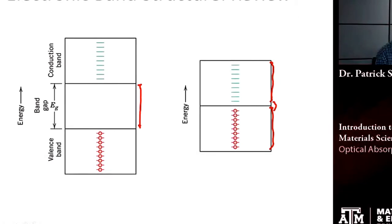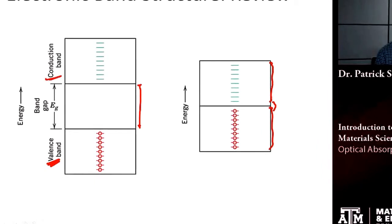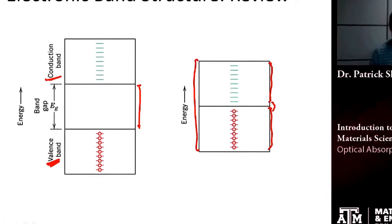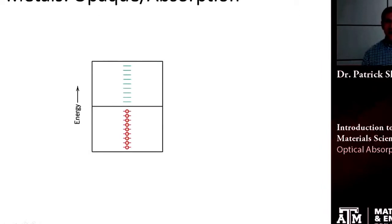In semiconductors and insulators, we have our filled valence band and our empty conduction band separated by some gap. In metals, we would have one whole band and it's partially filled. Now let's think about how light will interact in these two cases.